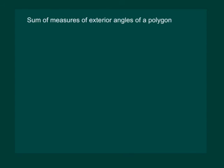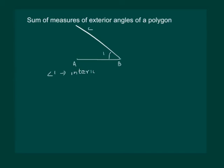Let us try to find the sum of the measures of exterior angles of a polygon. Let us understand exterior angles. Take a line AB and draw an angle through B, marking it C. Angle 1 is called the interior angle, and if we extend line AB, then angle 2 is called the exterior angle.